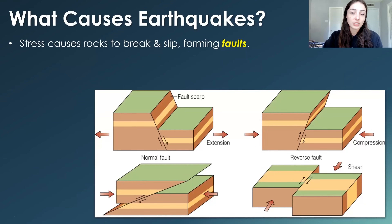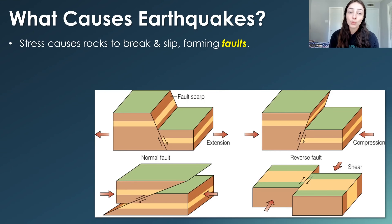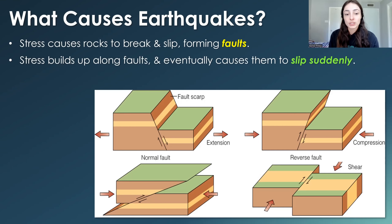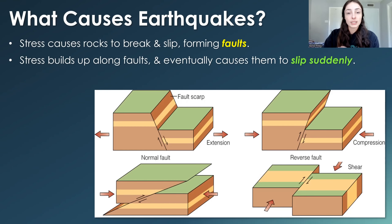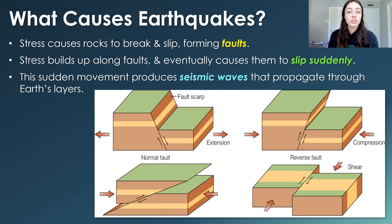What causes earthquakes? Stress is placed on rocks by the weight of other rocks, and over time it builds up and can sometimes cause rocks to break. Those breaks are called fractures, and when there's slip along that break — along that plane of the fracture — it's called a fault. When stress builds up along fault planes, it eventually causes the fault to slip suddenly after the stress overcomes the friction between the two rock blocks holding the fault plane together. That sudden movement produces seismic waves that propagate through Earth's layers.